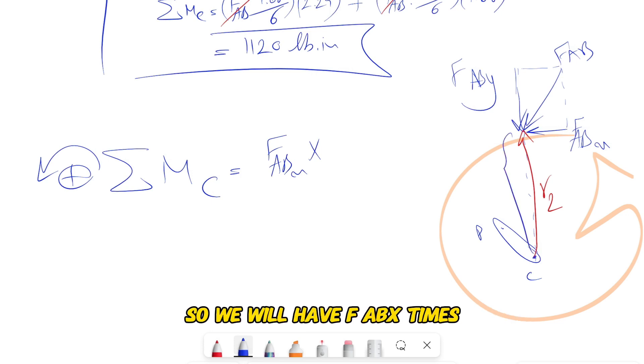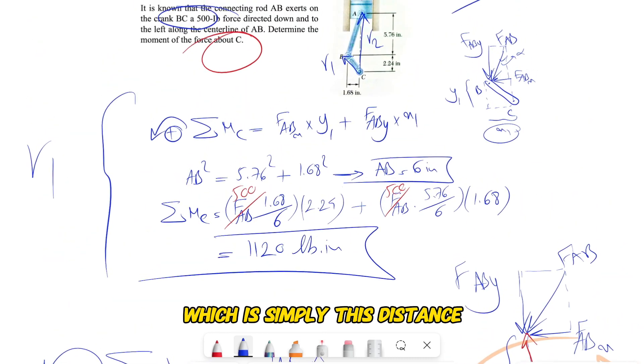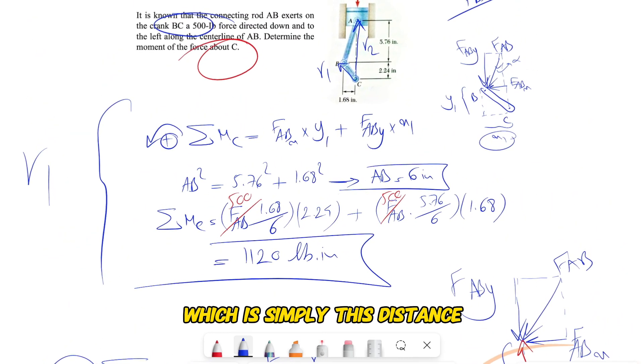And the only moment that we have is FABx. So we will have FABx times the vertical distance that we have.